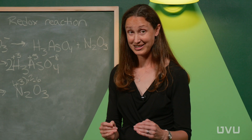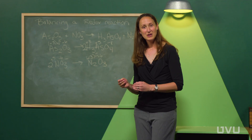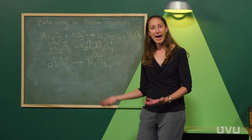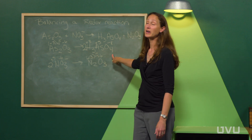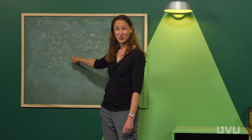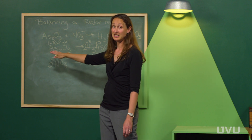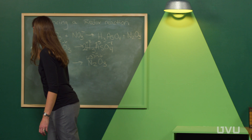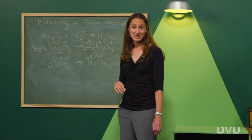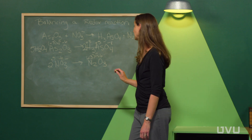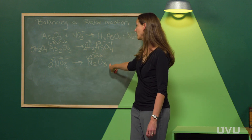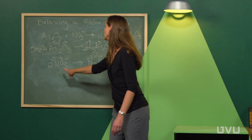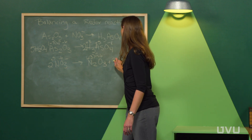Once the non-oxygen and non-hydrogen elements are balanced, balance oxygens by adding water molecules — don't add coefficients. For the arsenic half-reaction, there are eight oxygens on the left and only three on the right, so add five water molecules to the right. For the nitrogen half-reaction, there are six oxygens on the left (two nitrates, three oxygens each) and three on the right, so add three water molecules to the right.